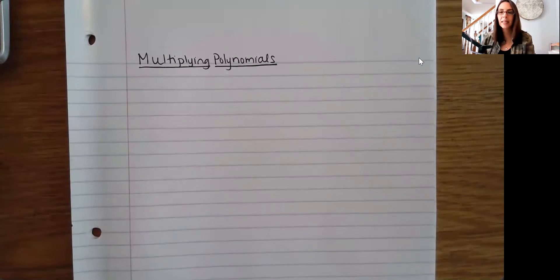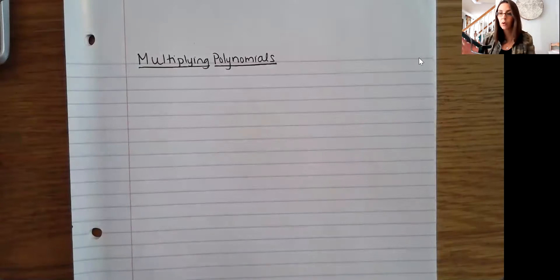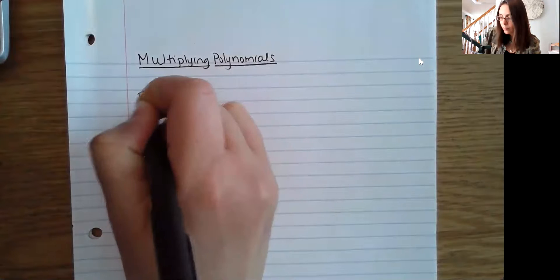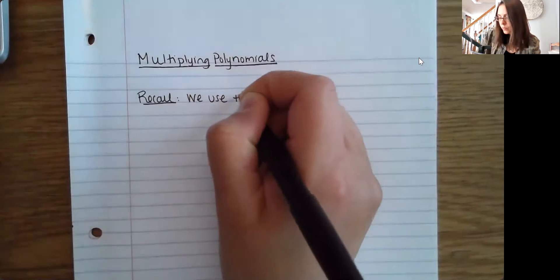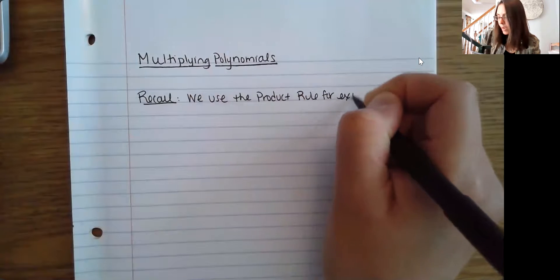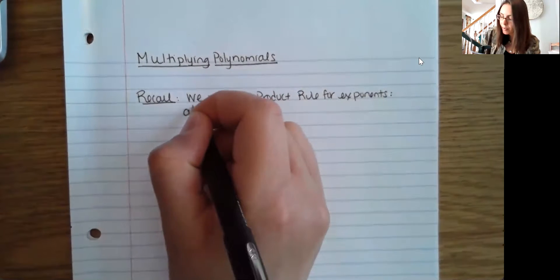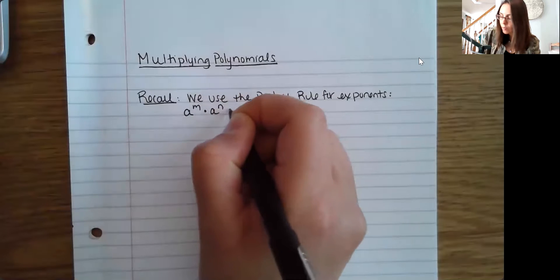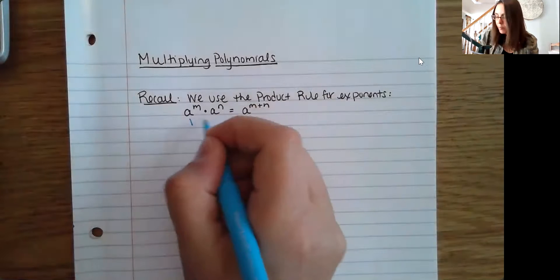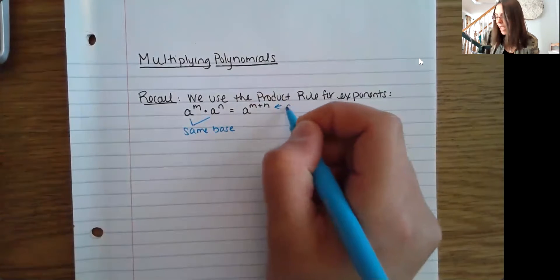For multiplying polynomials, the best thing to do is really just work through a whole bunch of examples. One thing we want to note is that when we multiply polynomials, we use the product rule. As a reminder, it says if I have a to the m times a to the n, then I can just add my exponents. Notice here that we have the same base, and if we have the same base, the shortcut is to add our exponents.